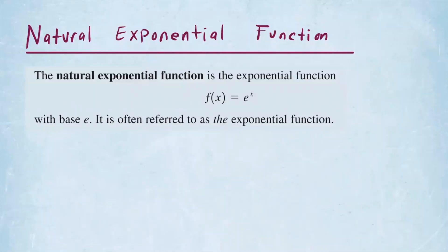Let's go ahead and talk about the natural exponential function. We call this function the natural exponential function because it has the base e. We know e is approximately 2.7 and so on.